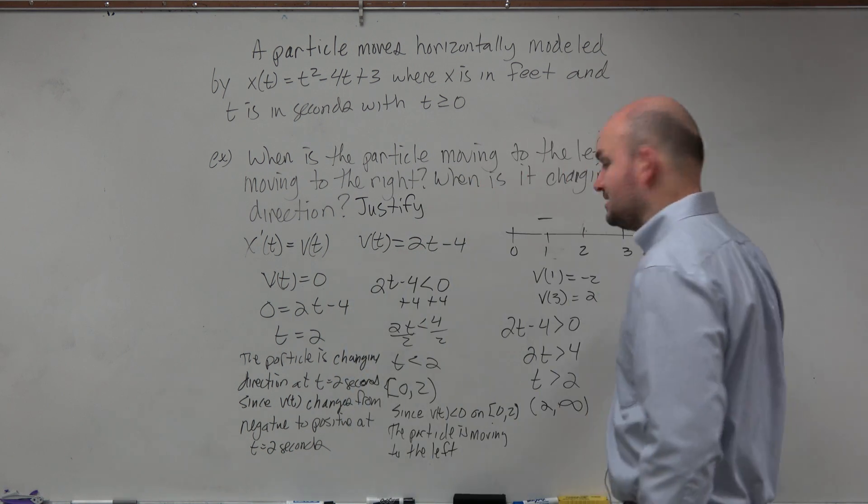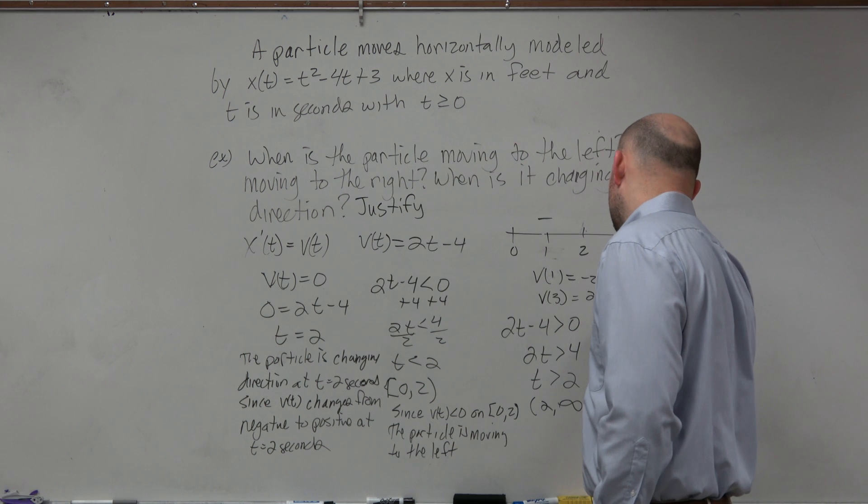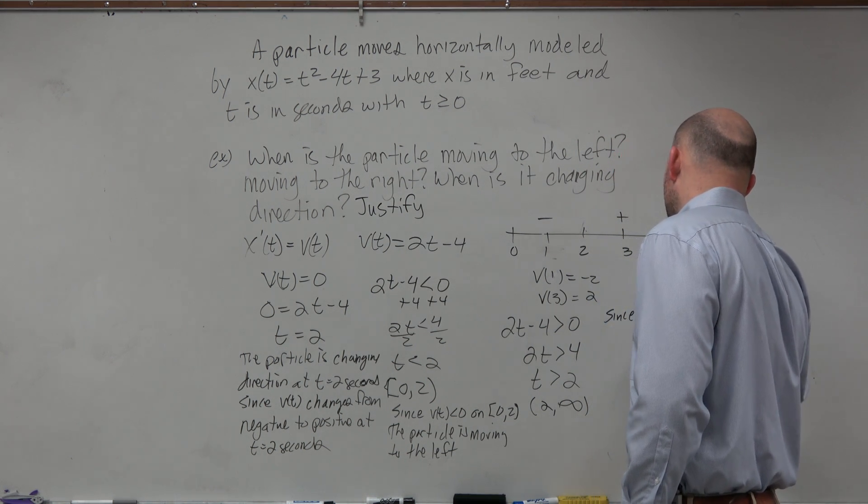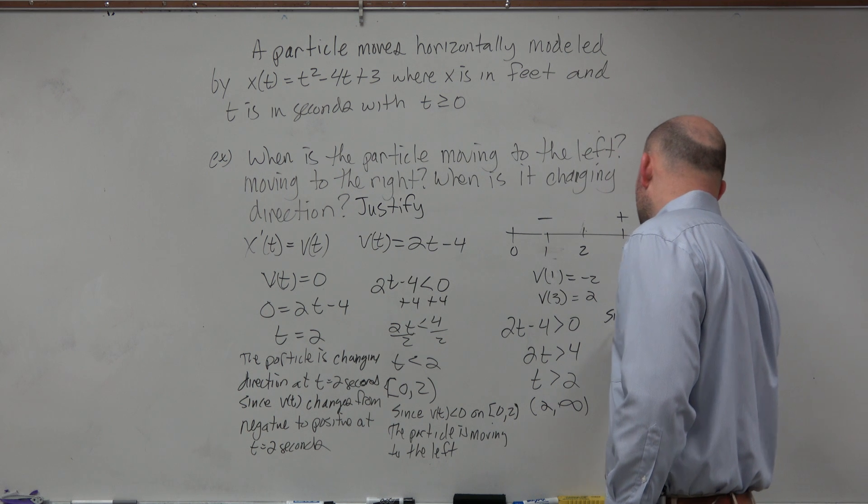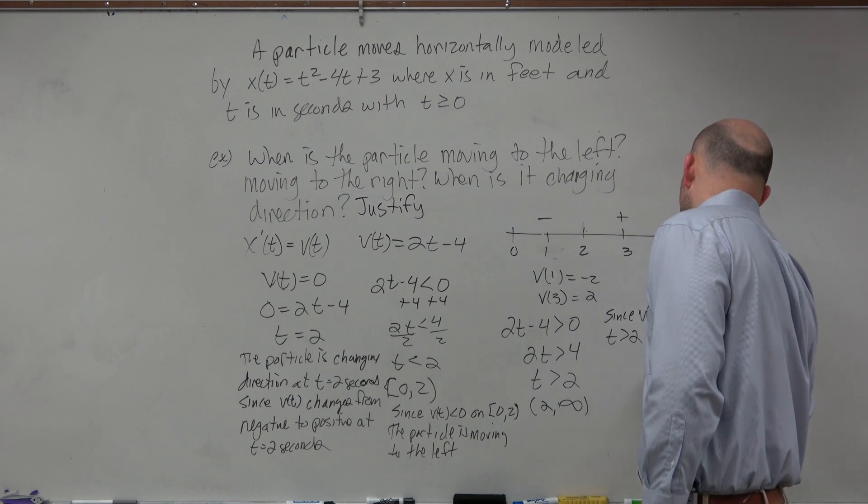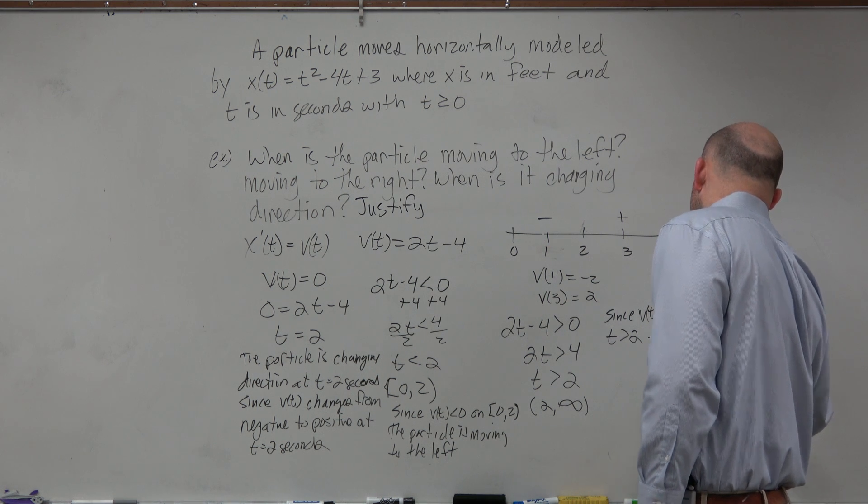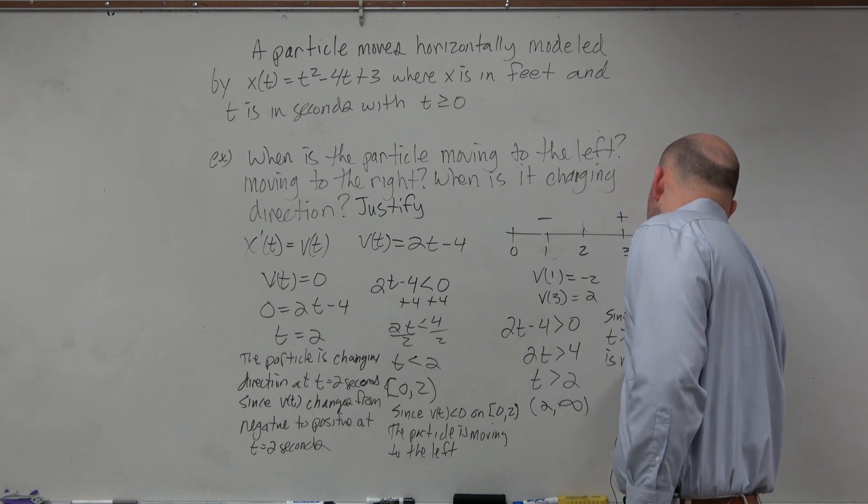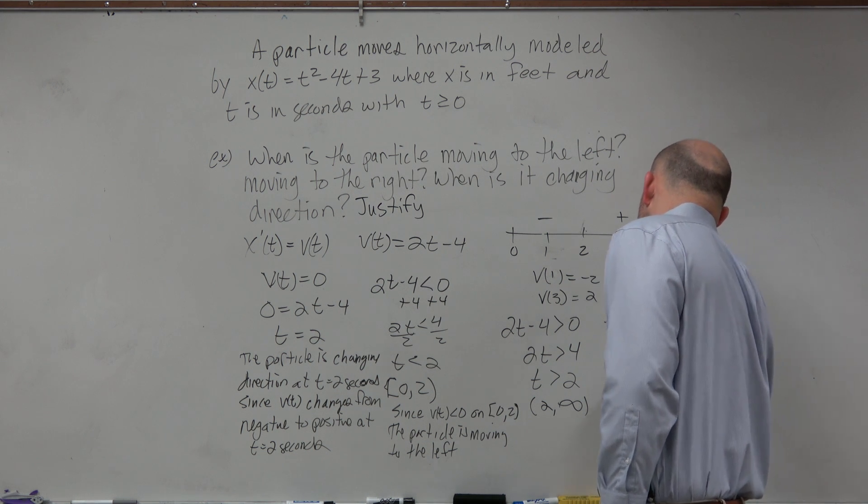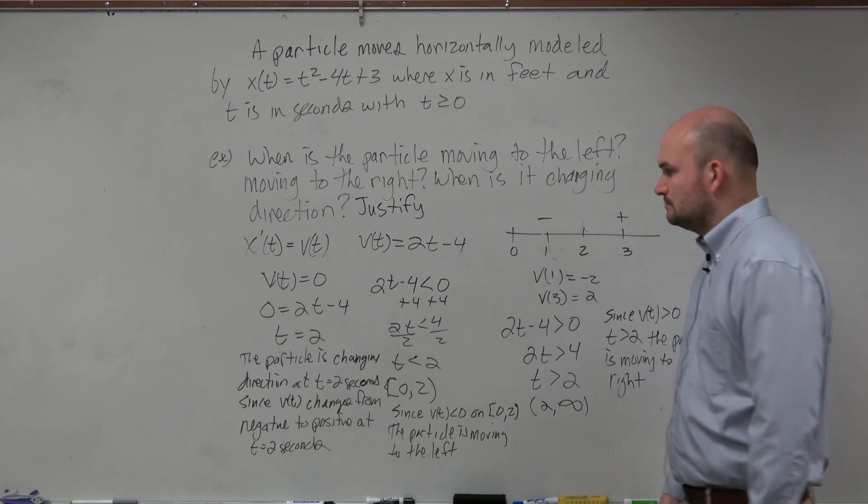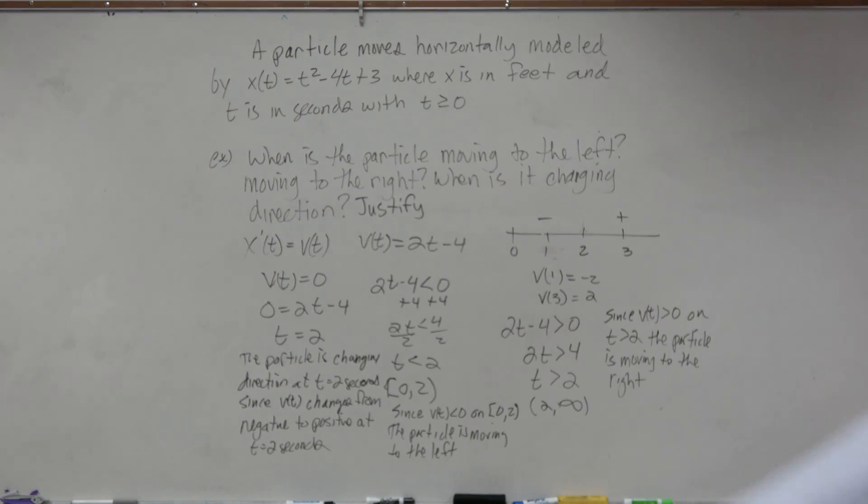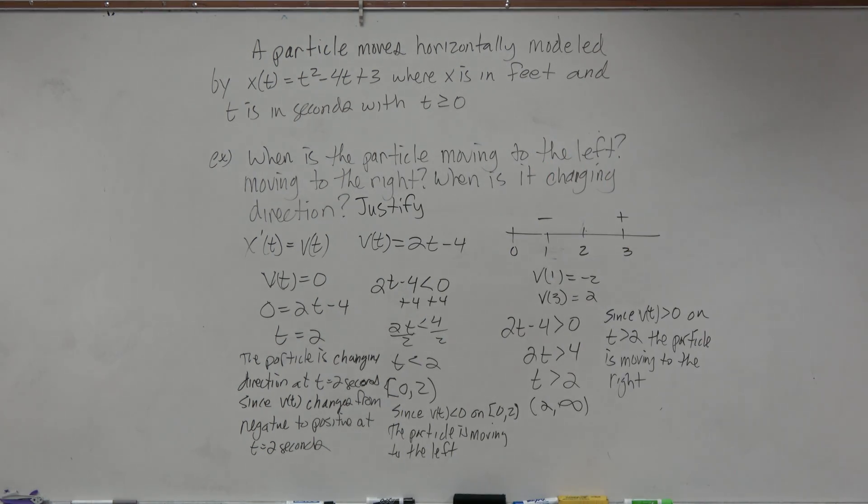And then here would be the exact same thing, which I have room. So since v sub t is greater than 0 on the interval where t is just greater than 2, I'll just leave it at that. The particle is moving to the right. It's a lot of writing. But I would recommend that you have that writing written down.